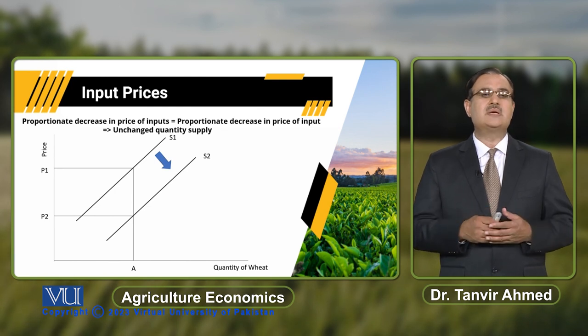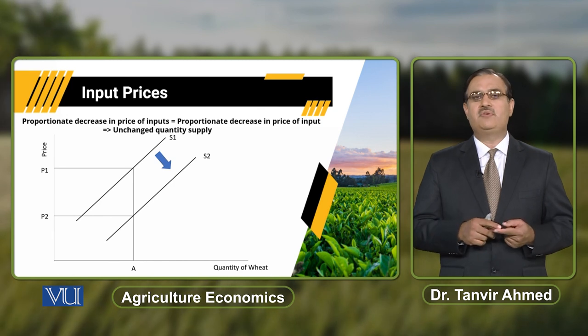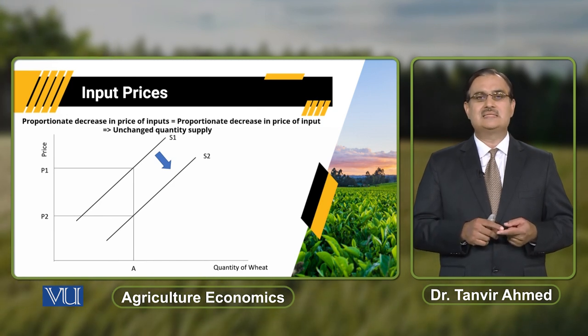Now, to summarize: whenever prices of input change, it results in a change in supply of the commodity. Input prices decrease hongi — supply of commodity increase kar jaegi, if we assume price of output is constant. Input prices increase karengi — supply decrease ho jaegi. Thank you.